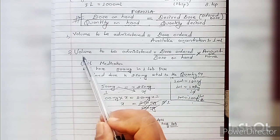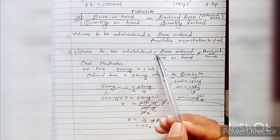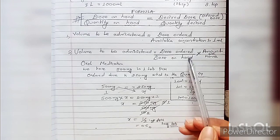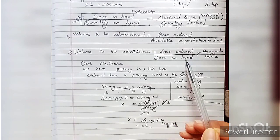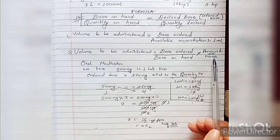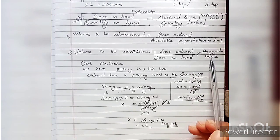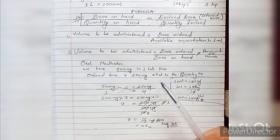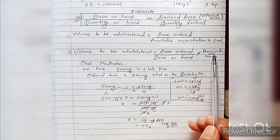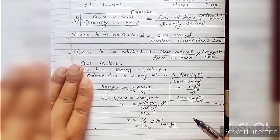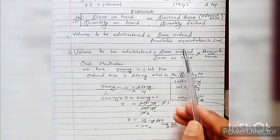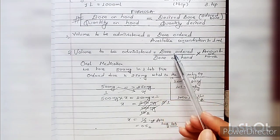The next formula is: volume to be administered equals dose ordered divided by available dose on hand, multiplied by the quantity on hand. This formula will be derived and used as follows.